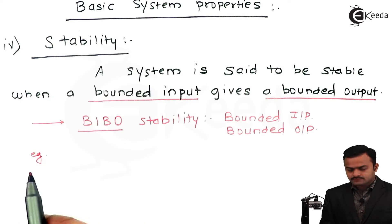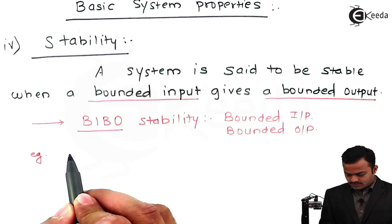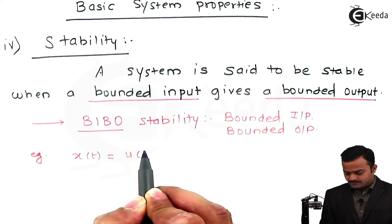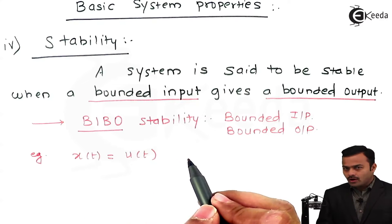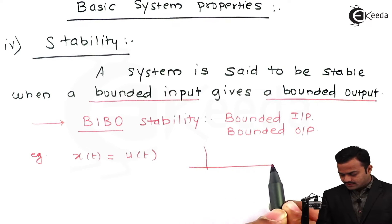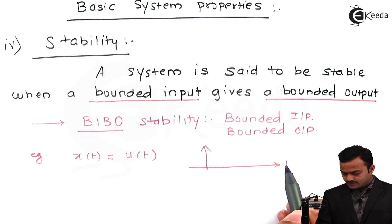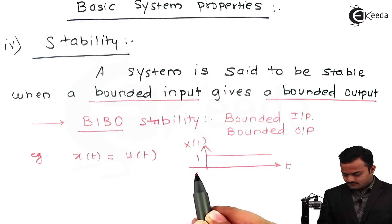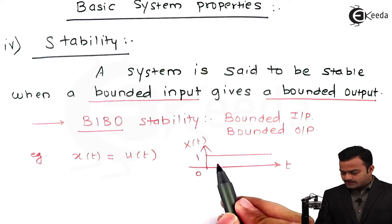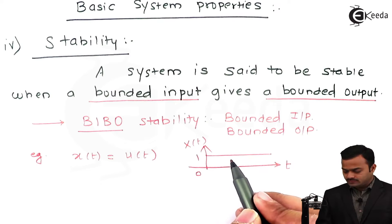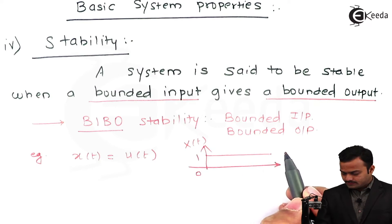Meaning, let's take an example of a system which is having x(t) as the input, which is the unit step. We call this a bounded input because if I plot a graph, it will be like this. No matter what is the value of t from 0 to infinity, my x(t) will have magnitude 1. So it is a bounded input.